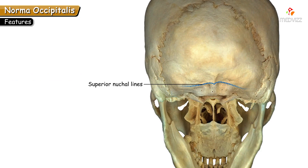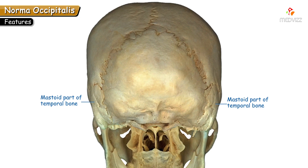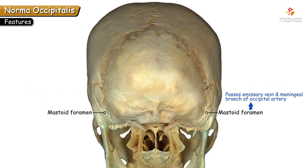In some individuals, faint arching ridges termed the highest nuchal lines may be found about a centimeter above the superior nuchal lines, though not seen in all skulls. The mastoid bone is identified by a small foramen called the mastoid foramen, present over the mastoid process near the occipitomastoid suture — it transmits an emissary vein and the meningeal branch of the occipital artery.